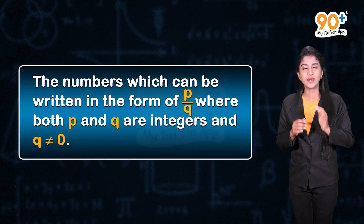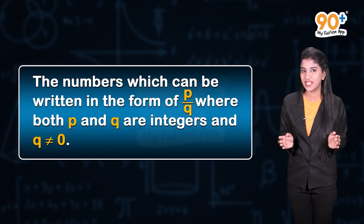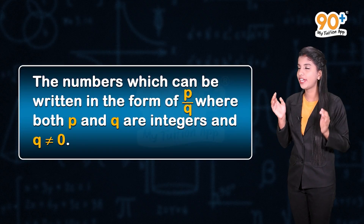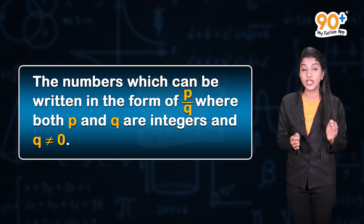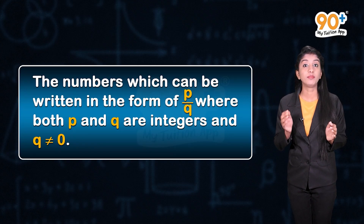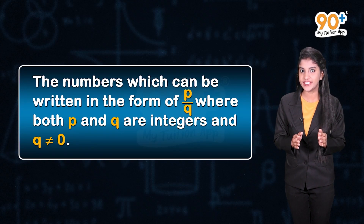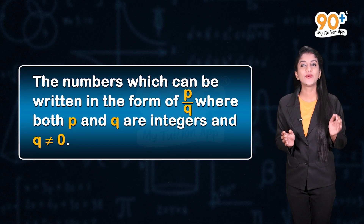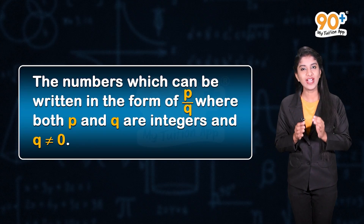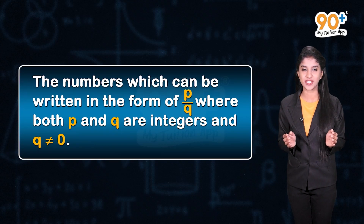Next, let's have a look at the closure property on the set of rational numbers. Recall what rational numbers are. Those numbers which can be written in the form of P divided by Q, where both P and Q are integers and Q not equal to 0, are called rational numbers.